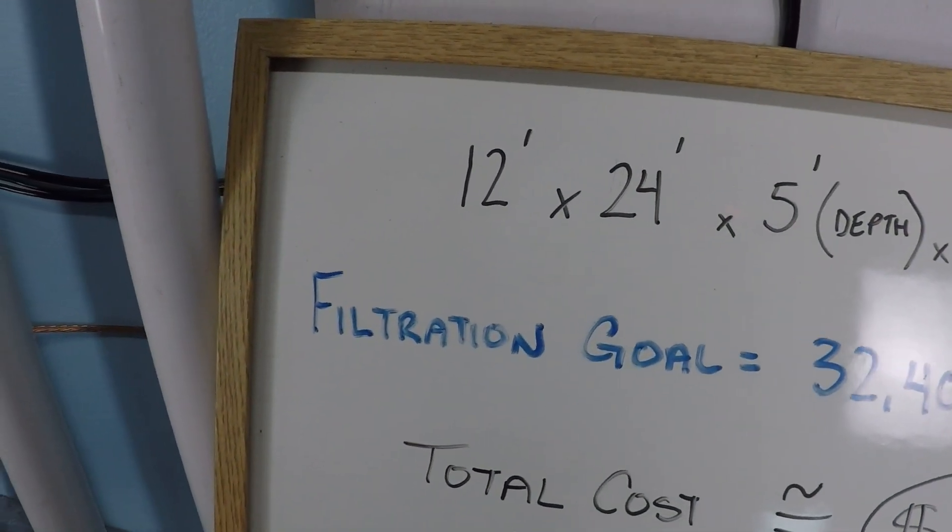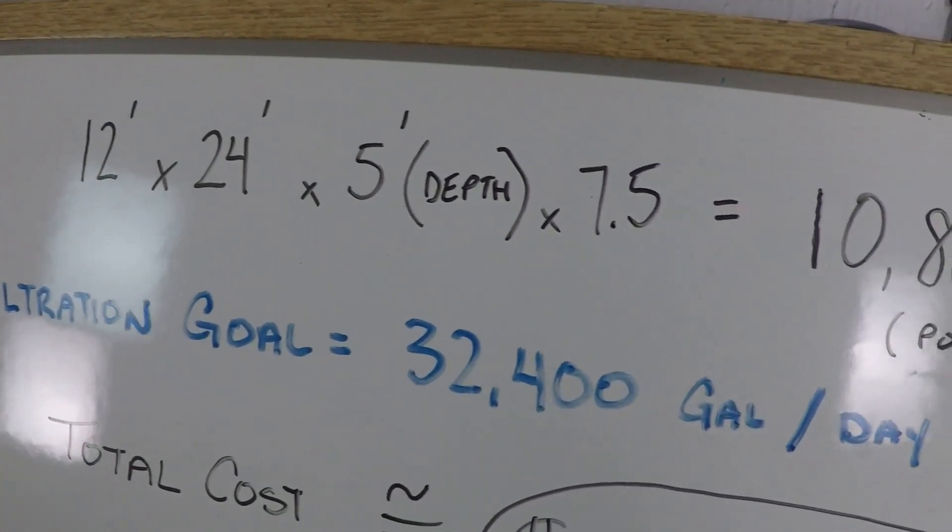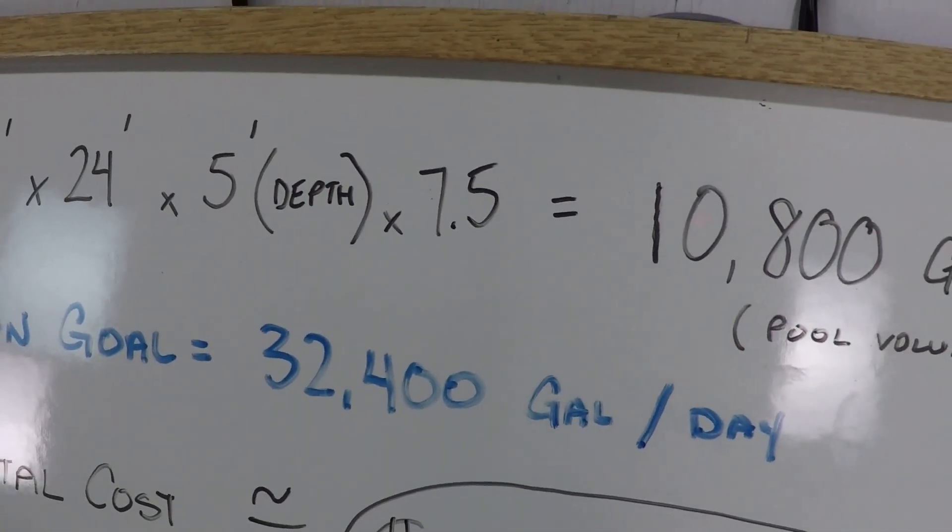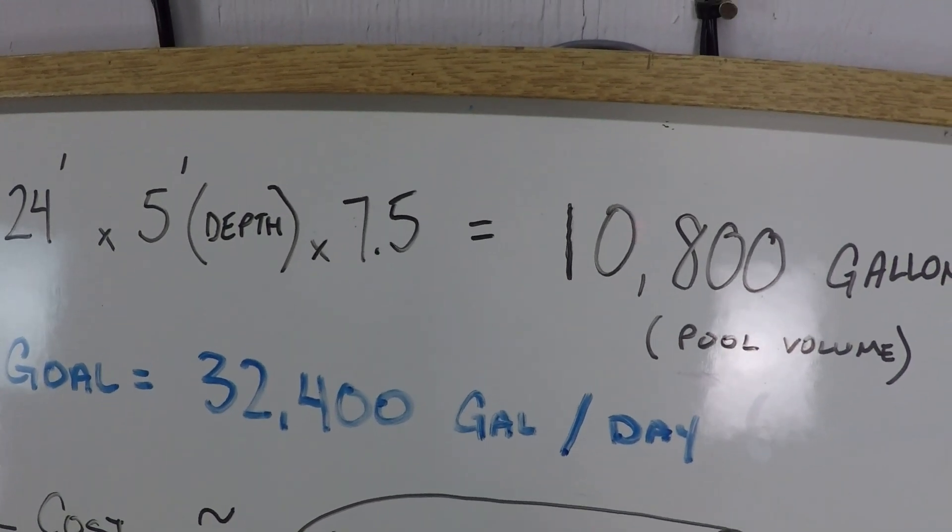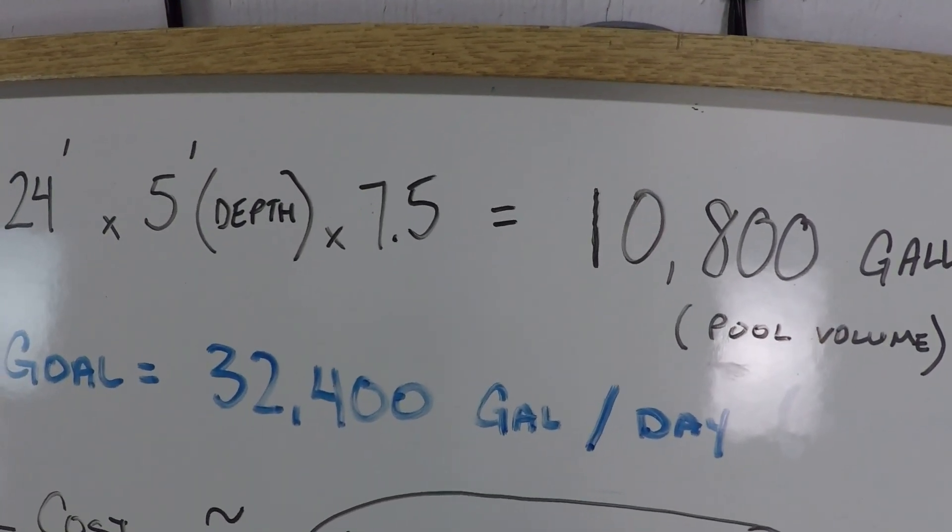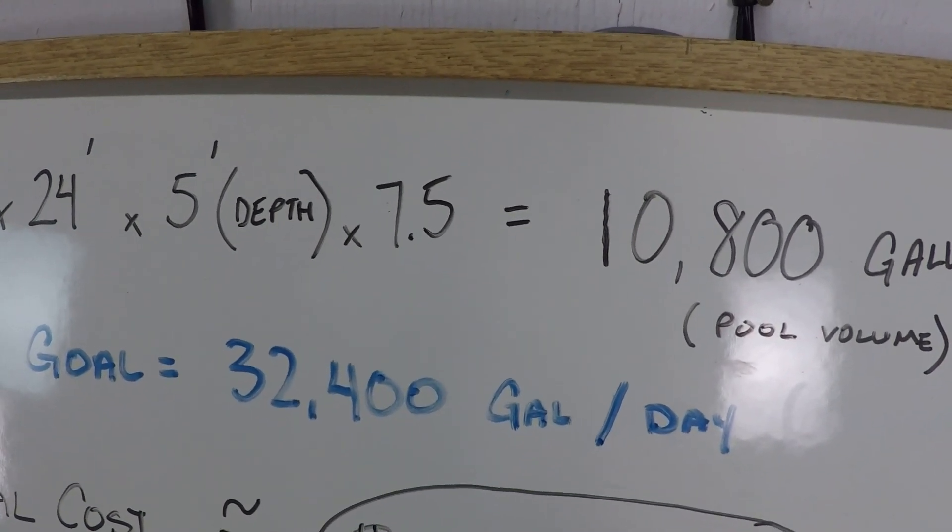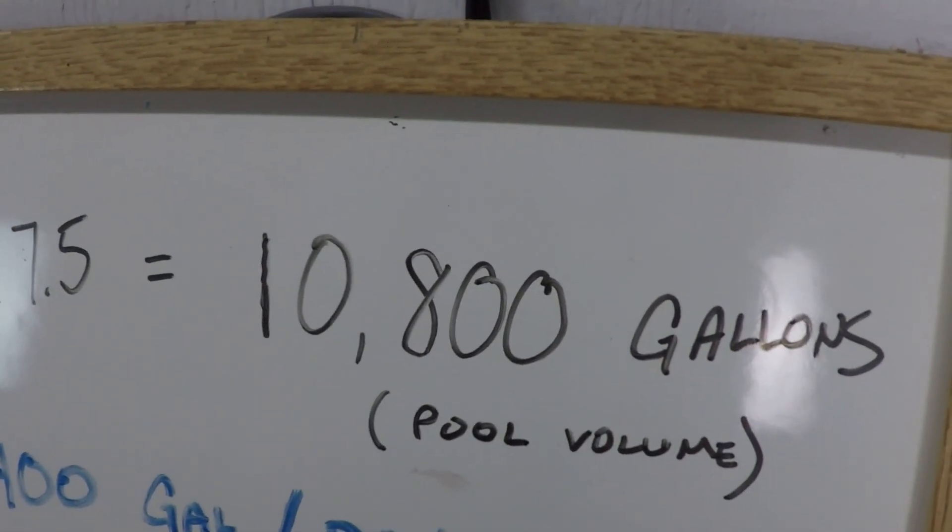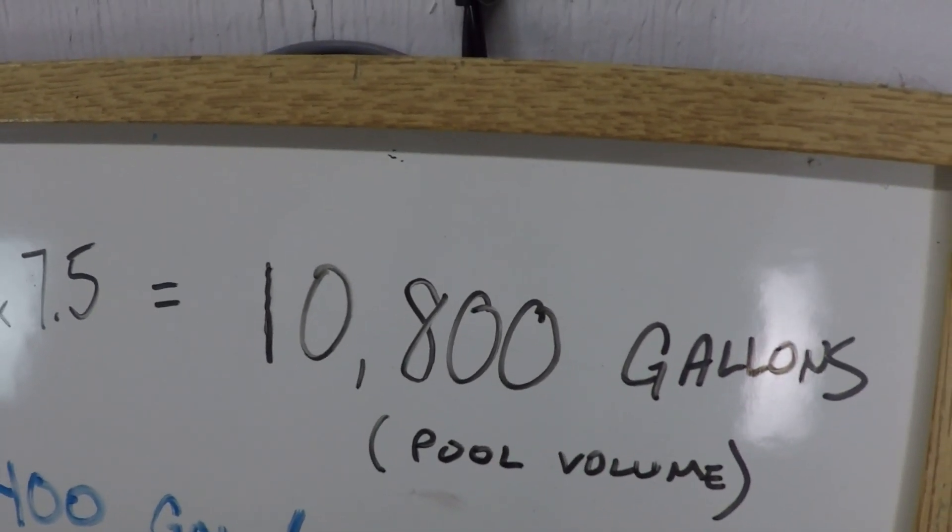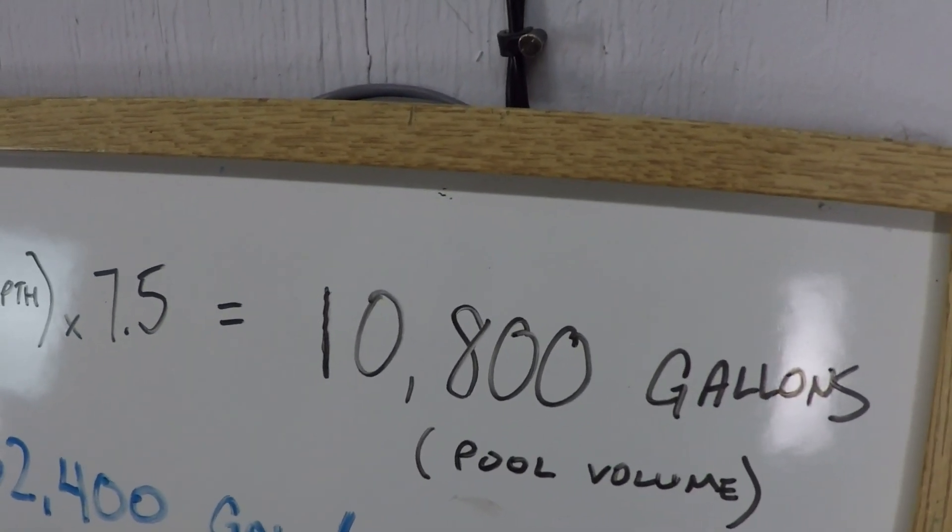So our next step is to determine the filtration goal. And that would be 32,400 gallons per day. And you might be wondering, why that number? Well, that number represents approximately 95% of all of the water in the pool being filtered at least one time. If you only filtered 10,800 gallons in a day, you wouldn't actually get all of the water in your pool. You would only get maybe about 63% or so.